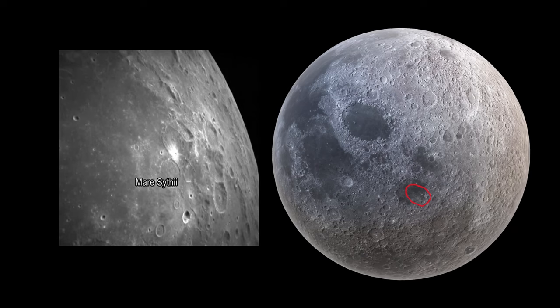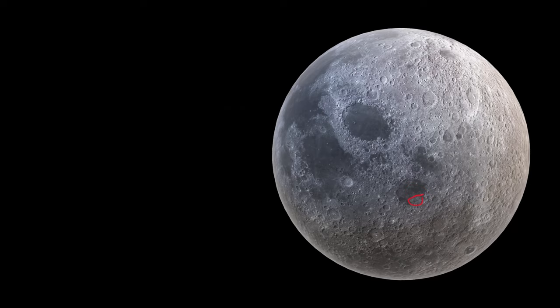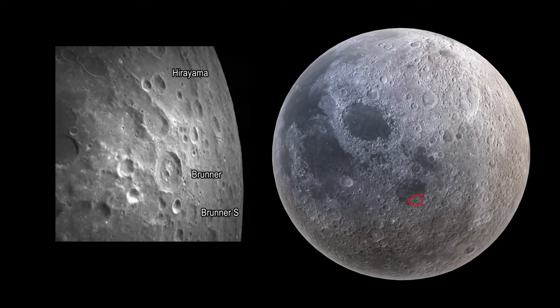Near this mare, domes — rounded elevations — are also visible. Next, we will take a look at the Hirayama Crater, named after the Japanese astronomer Yotsugo Hirayama. This crater is a bowl-shaped depression on the moon's surface formed by impact events. Located on the far side of the moon, this region occasionally comes into view from Earth due to favorable librations. This eroded crater showcases multiple overlapping impacts on its outer rim and interior. Surrounding craters such as Hirayama K, Hirayama C, and Hirayama Q have contributed to complex interactions that shaped this lunar landscape.